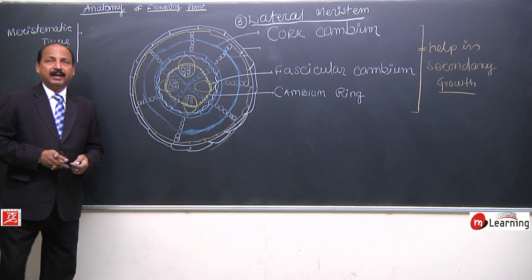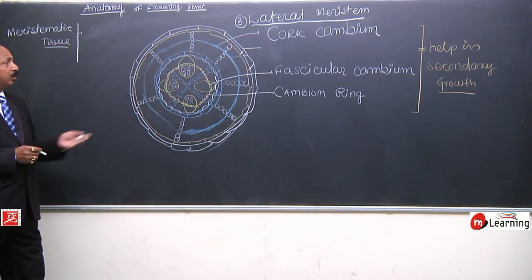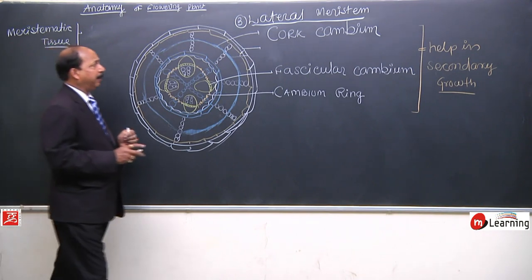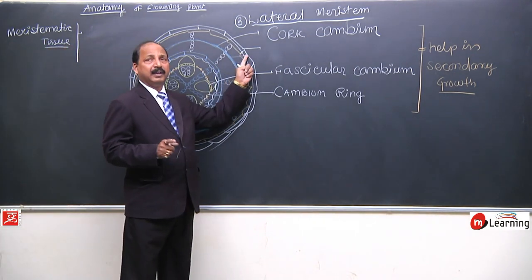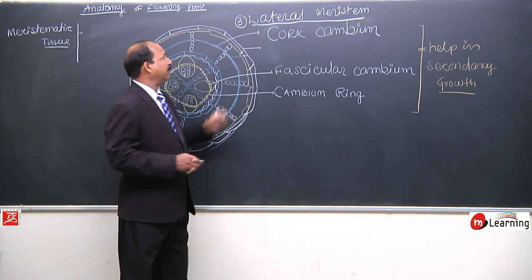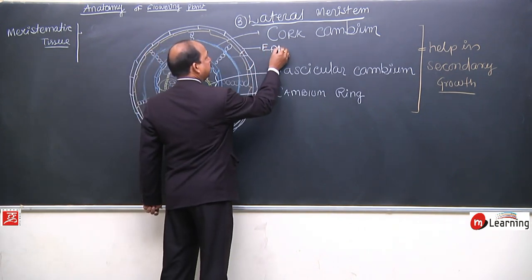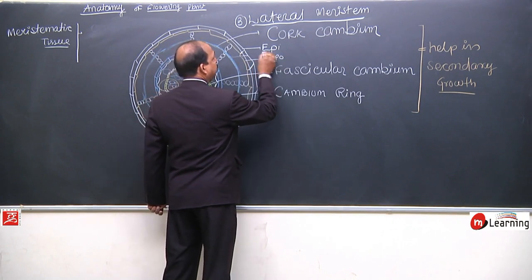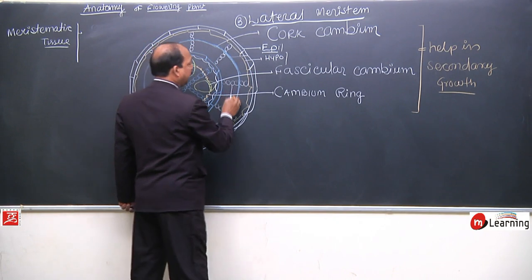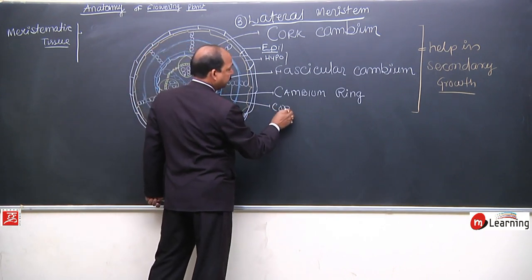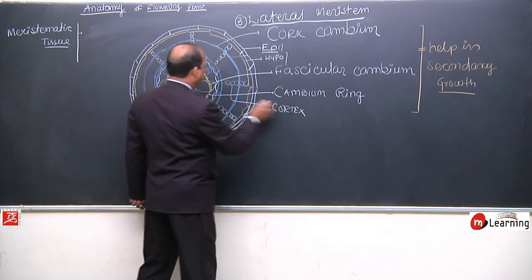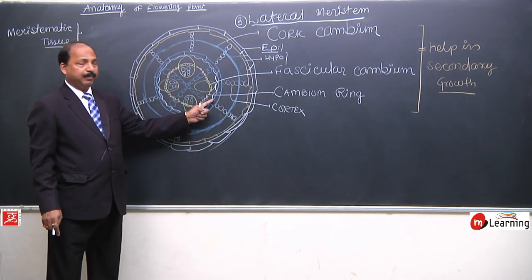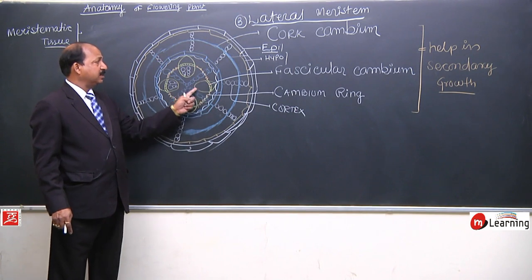In this diagram — which is a diagram of a dicot stem — we see what was found in a dicot stem: the outer tissue was called epidermis, the second layer was hypodermis, then cortex, then endodermal cells, and then pericycle. Our concern here is lateral meristem.